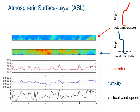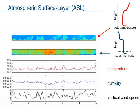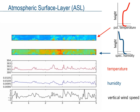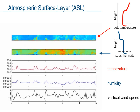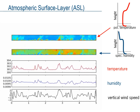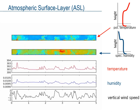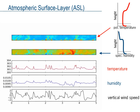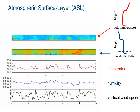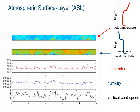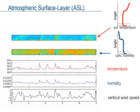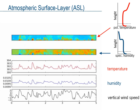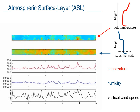Now we see, in the bottom three graphs, the space series of temperature, humidity, and vertical wind. Indeed, we see that temperature and humidity are often correlated with vertical wind speed. Furthermore, we can see that the typical fluctuations are about 1 Kelvin for temperature, half a gram per kilogram for humidity, and up to 2 meters per second for vertical wind speed. Finally, a typical length scale seems to be about 100 meters.